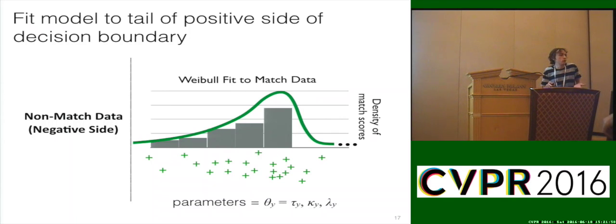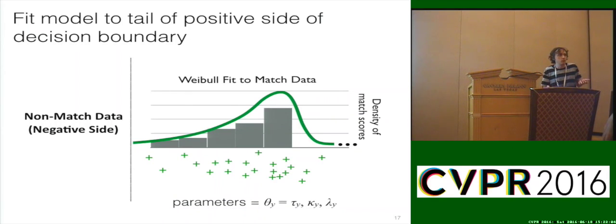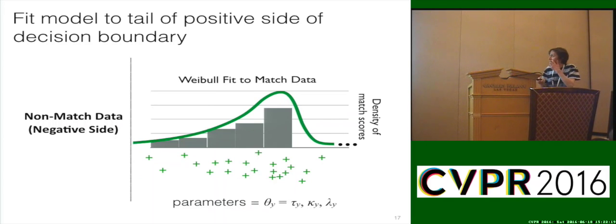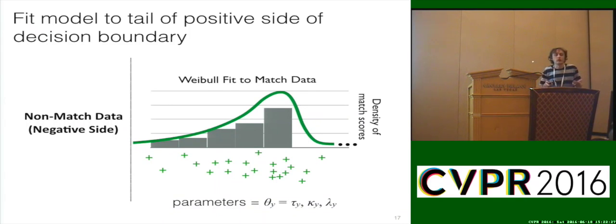Why choose the Weibull? Because the scores are bounded from below — we're taking everything from zero onwards since the SVM gives positive scores for positive classification starting at zero. We end up with a model expressing that Weibull distribution: a three-parameter model with scale, shape, and position. This gives us the probability of inclusion, which we can couple with the original decision to make our final determination, because we now have a probabilistic calibration of the model.